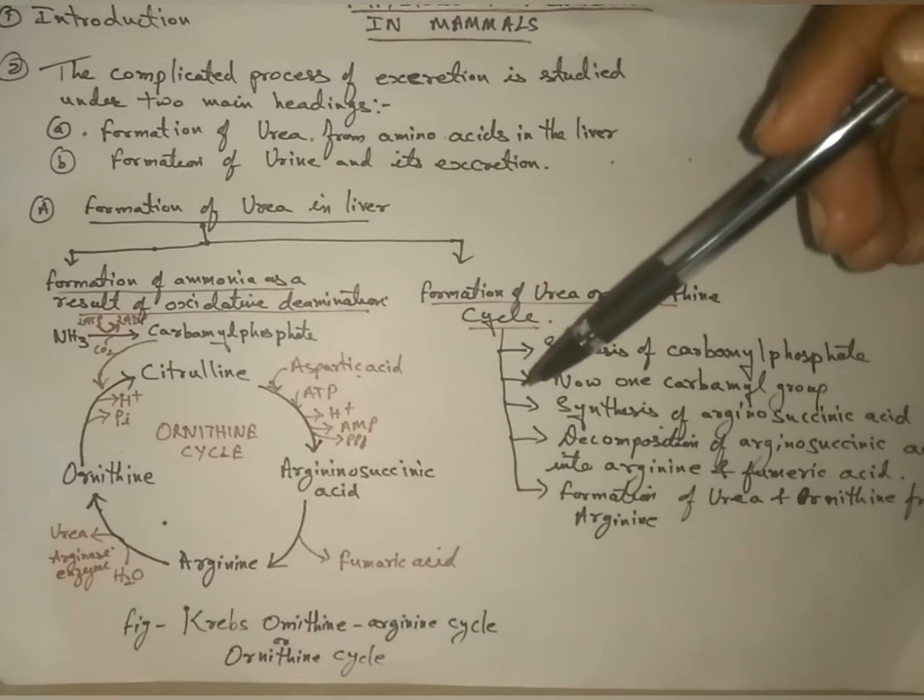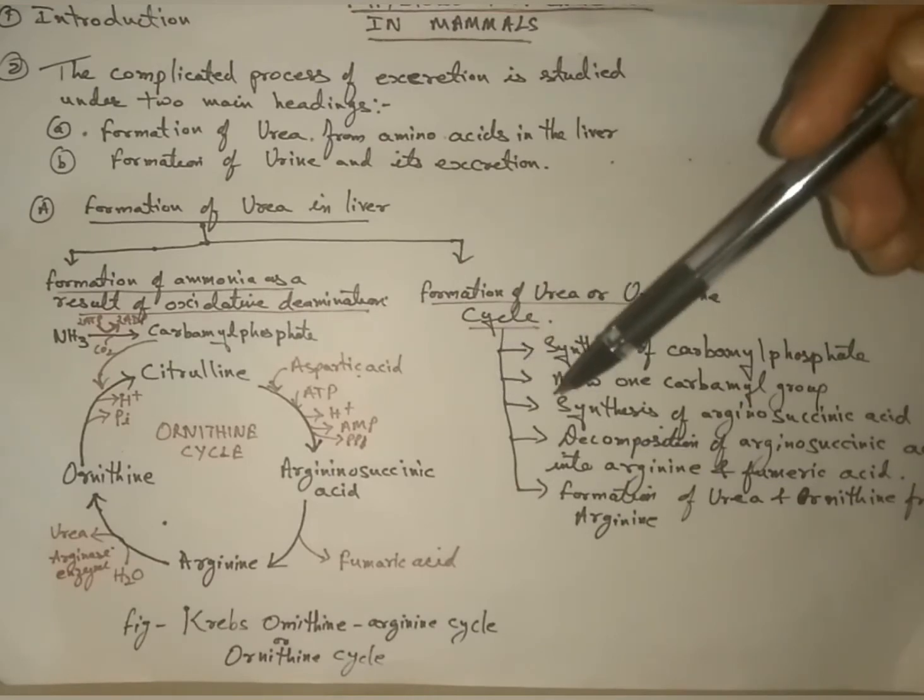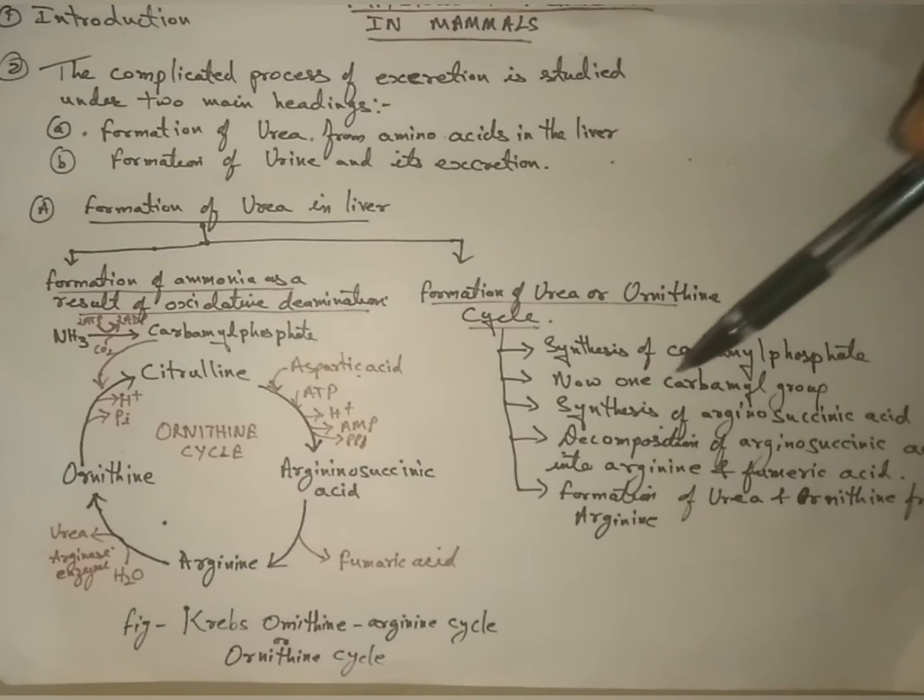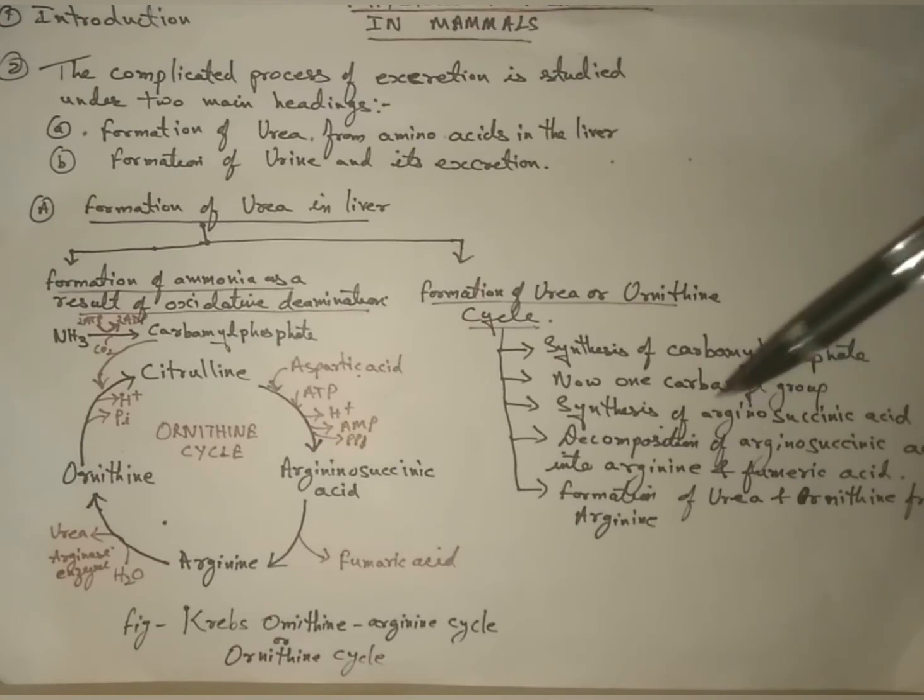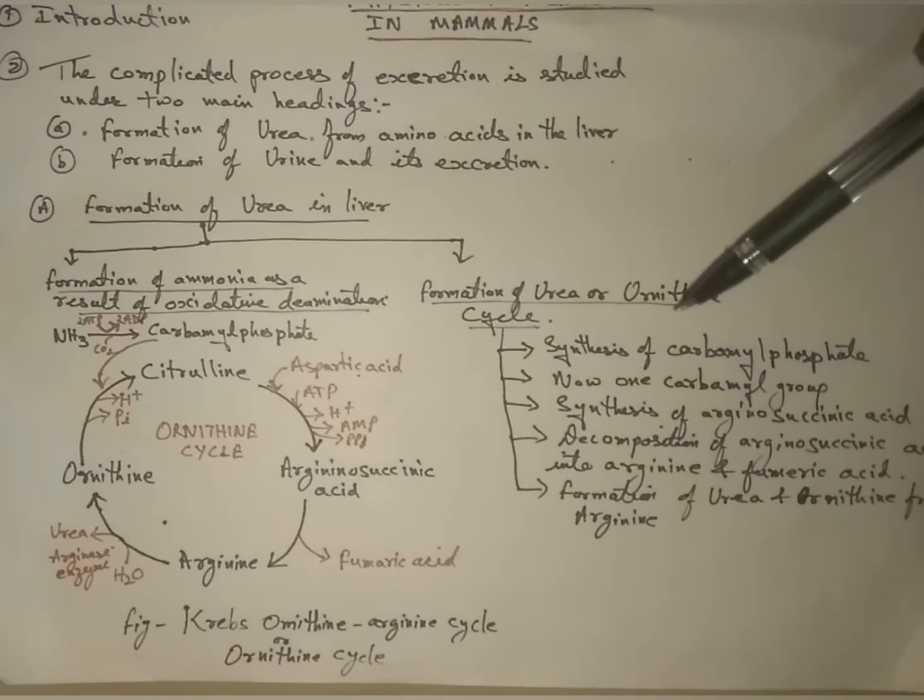The process takes place inside mitochondria of liver cells. First of all, the amino group of amino acid is transferred to alpha-ketoglutaric acid. As a result, glutamic acid is formed.